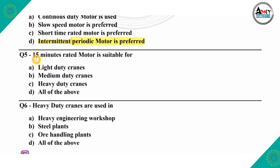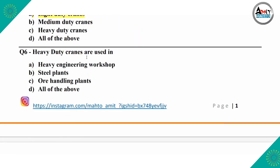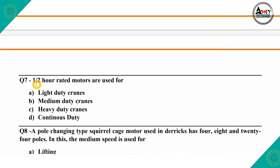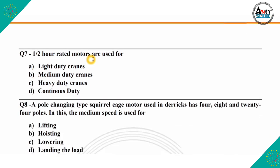The next question is: a 15-minute rated motor is suitable for light duty crane, medium duty crane, heavy duty crane, or all of the above. The correct option is option A, which is light duty crane. Heavy duty cranes are used in heavy engineering workshop, steel plant, or handling plant — all of the above. So the right answer is option D. Question number 7: half-hour rated motors are used for light duty crane, medium duty crane, heavy duty crane, or continuous duty. The correct option is option B, which is medium duty crane.